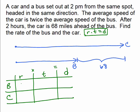So, let's say the bus is x and the rate of the car is twice as fast, 2x.